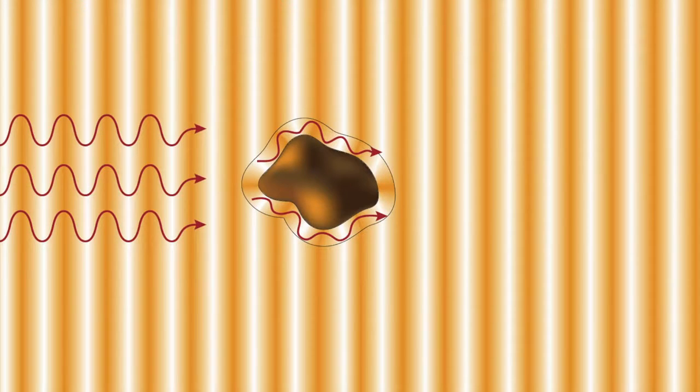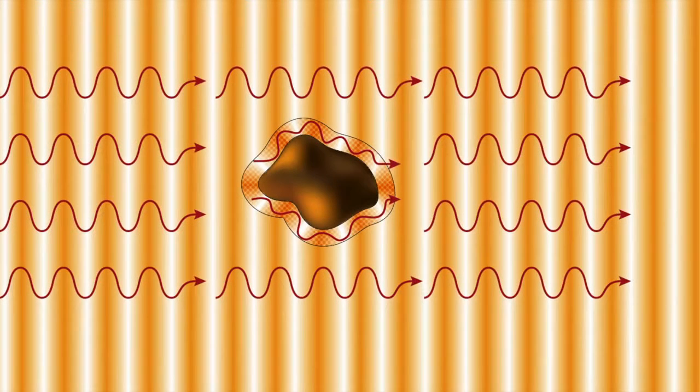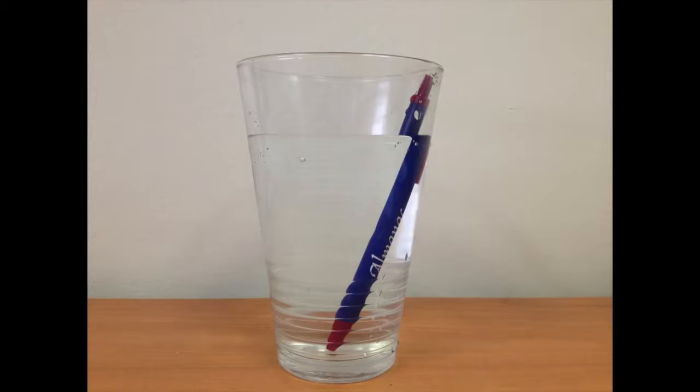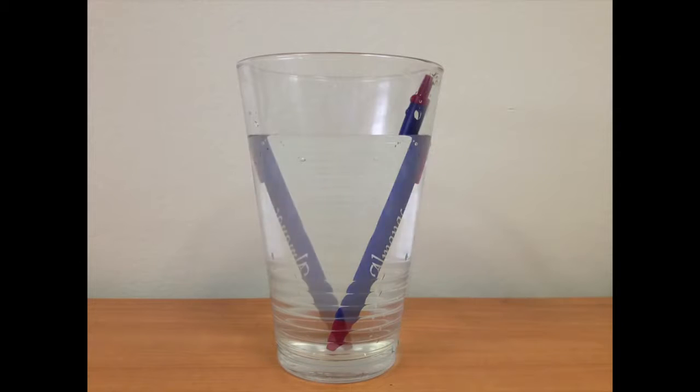Can we make an object invisible? What if we design a man-made material that cloaks an object? In other words, it bends an incoming wave around it without being scattered, so we don't see the object. When the light passes through water, it bends in one direction. Can we make an artificial medium that bends the wave the other direction? These are examples of exciting possibilities that a new class of materials known as metamaterials can provide us.